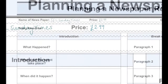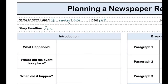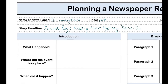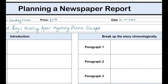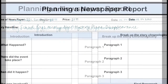You need to think of a really catchy story headline that is going to attract the reader's attention. You might want to use alliteration, where the sounds at the start of each word are the same, or you might want to use words like 'mystery' or 'disappearance' that are going to leave the reader wondering what happened to the plane.